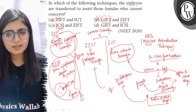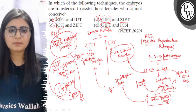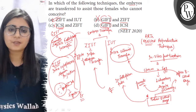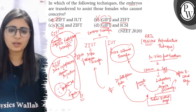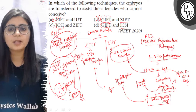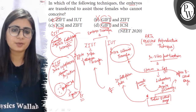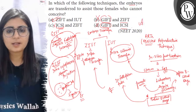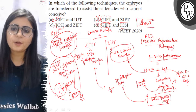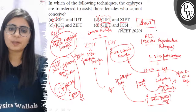To summarize: GIFT involves the transfer of a gamete, and ICSI involves In Vitro Fertilization by injecting sperm directly into the cytoplasm of the ovum. Therefore, the correct answer to this question is Option A — ZIFT and IUT, which are the embryo transfer techniques. I hope this explanation is clear. All the best.